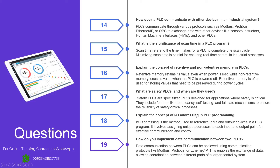Explain the concept of IO-addressing in PLC programming. IO-addressing is the method used to reference input and output devices in a PLC program. It involves assigning unique addresses to each input and output point for effective communication and control. Data communication between PLCs can be achieved using protocols like Modbus, Profibus, or Ethernet IP, enabling the exchange of data and coordination between different parts of a larger control system.